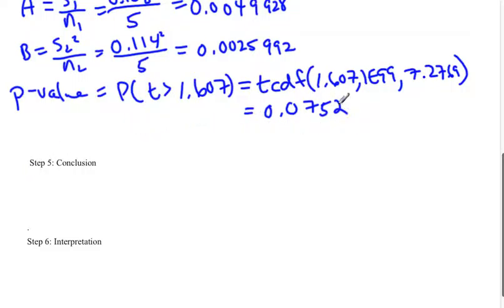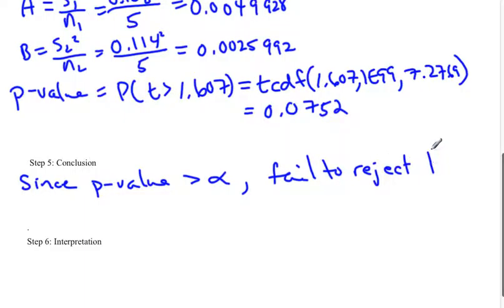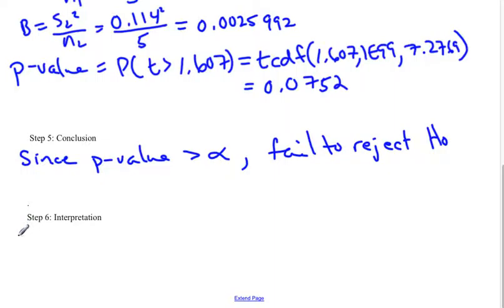Now we make our conclusion. With a p-value, you either reject or fail to reject depending on how your p-value compares to your α. In this case, the p-value is greater than our α, because α was 0.05 and this is 0.07. Since our p-value is greater than our α, we fail to reject H₀. If your p-value is bigger than your α, it means you didn't find an unusual value and you have to fail to reject.